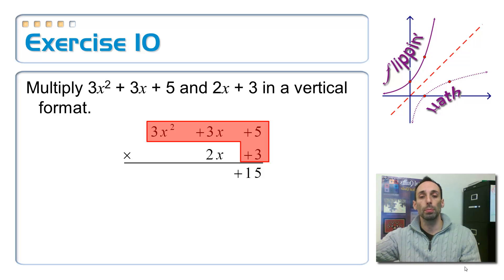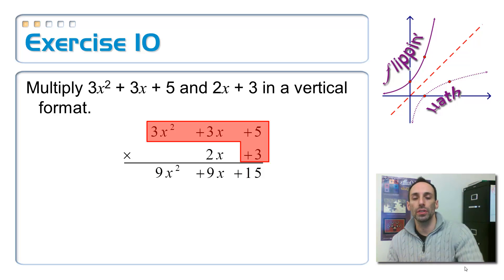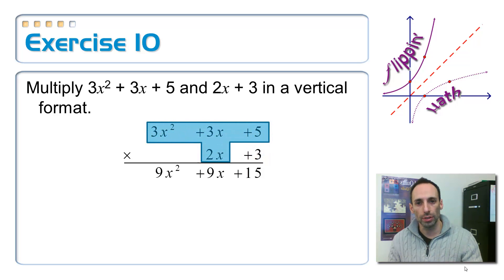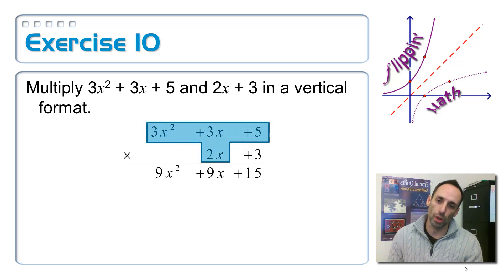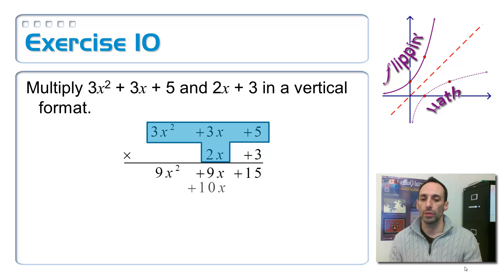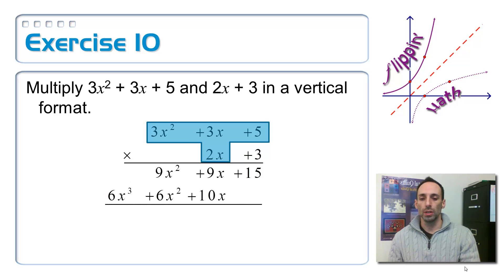3 times 3x gives 9x, and 3 times 3x squared gives plus 9x squared. I've essentially distributed the 3 times everything. Now multiplying 2x times everything: 2x times 5 gives 10x — placed right below the 9x so like terms line up. 2x times 3x gives 6x squared. 2x times 3x squared gives 6x cubed. Draw the line and add up the columns.